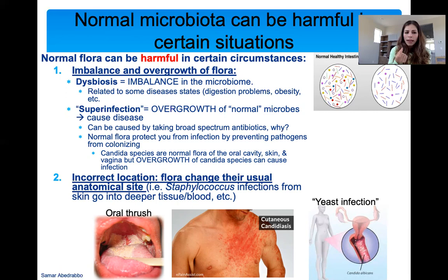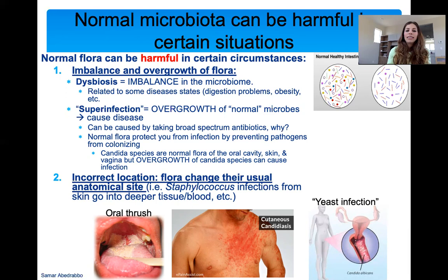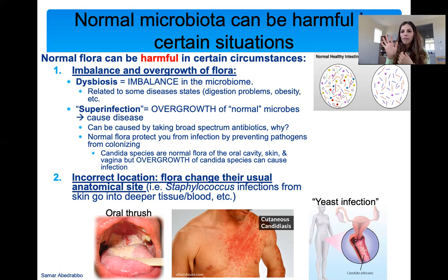Also, if your normal flora changes its usual anatomical site, this can lead to disease. For example, Staphylococcus epidermidis is found on your skin — it shouldn't go anywhere else. It can cause disease when it gets out of its usual location. An example is Staphylococcus getting into blood or deeper tissue. My baby daughter actually had a Staphylococcus infection because she kept scratching due to eczema and it got deeper. She had to take antibiotics because even though Staphylococcus is fine on her skin, it shouldn't get into the blood or deeper tissue.